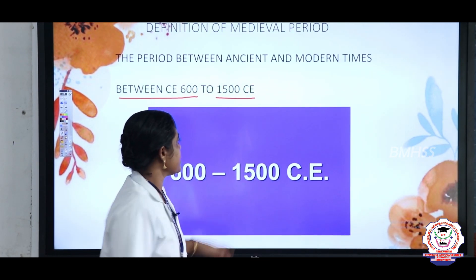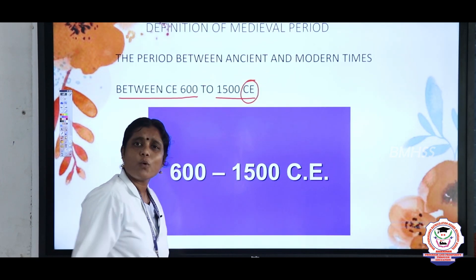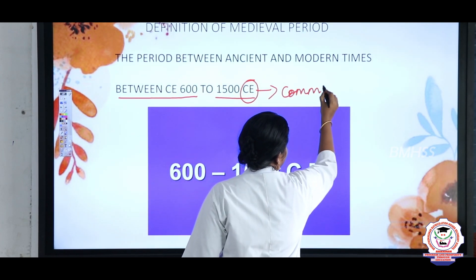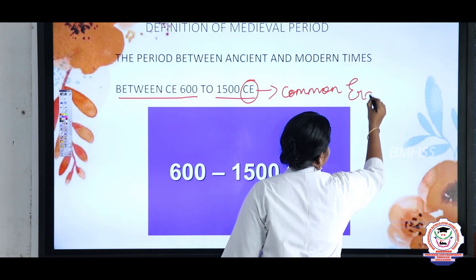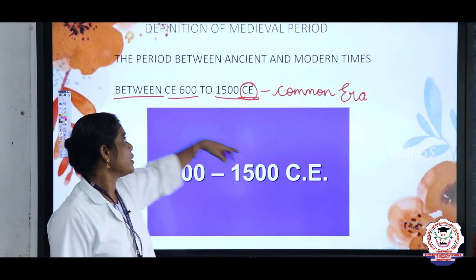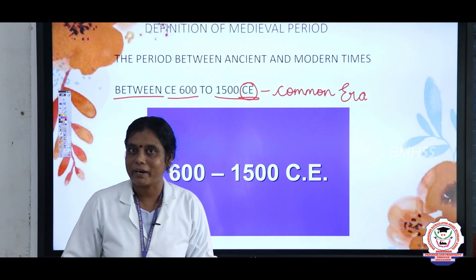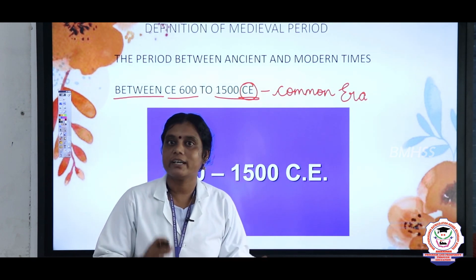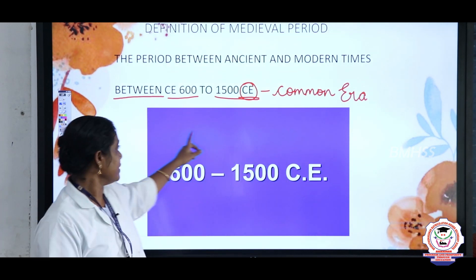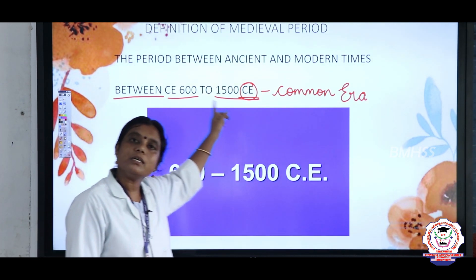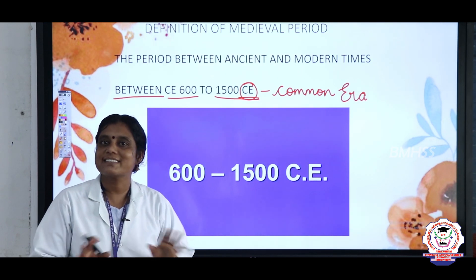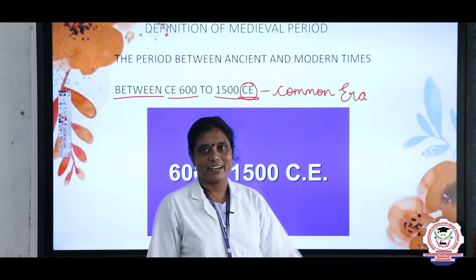You may ask: what does CE mean? CE means Common Era. So the medieval period is the period between ancient and modern age, spanning CE 600 to 1500 CE.